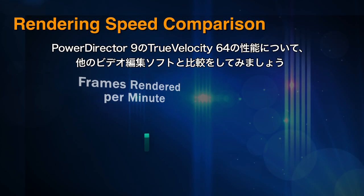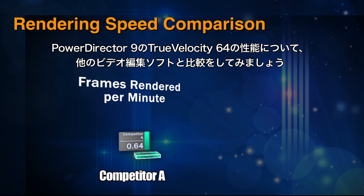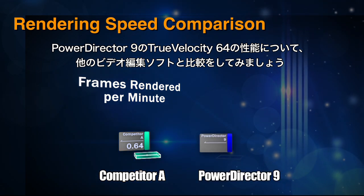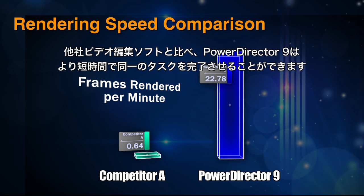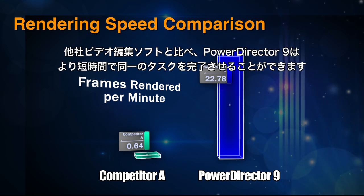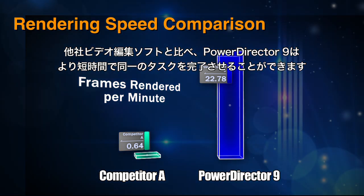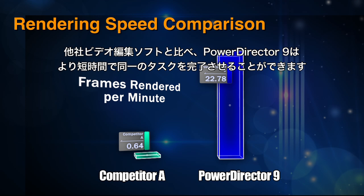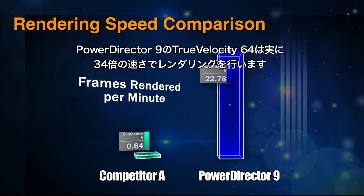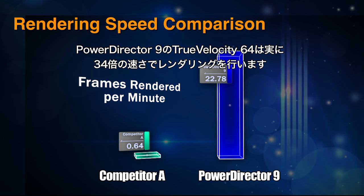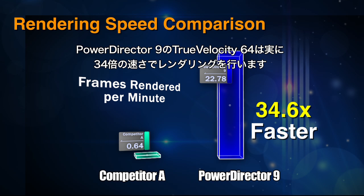We put PowerDirector 9's True Velocity 64 to the test against other consumer video editing software. While competing video editing software can take hours to render a video, PowerDirector takes a fraction of the time for the same task. With PowerDirector 9's True Velocity 64, you can render up to 34 times faster.